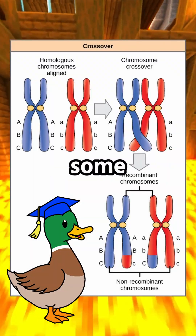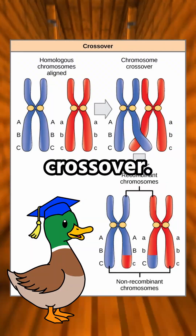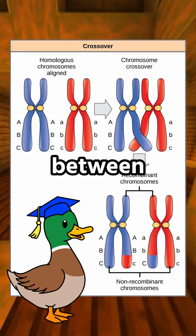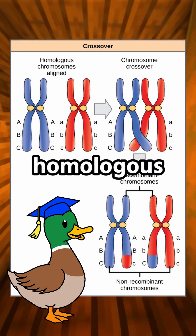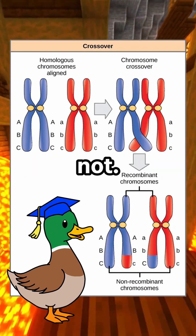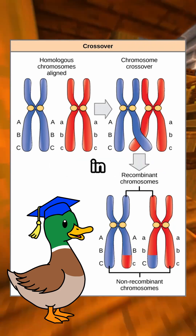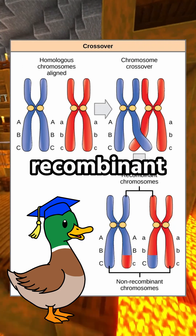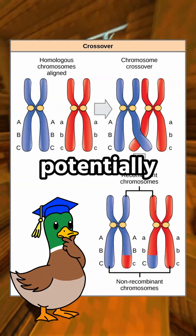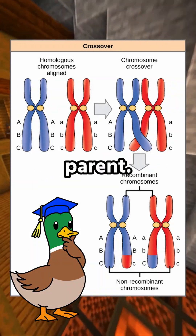During meiosis, some segments of homologous chromosomes undergo crossover. Keep in mind that even though alleles may differ between pairs of homologous chromosomes, the corresponding genes do not. Here, genetic material is exchanged, resulting in recombinant offspring with new combinations of alleles, potentially different genotypes altogether from either parent.